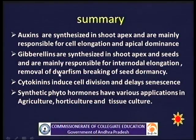Summary: We have discussed auxins, gibberellins and cytokinins. Auxins are synthesized in the shoot apex and are mainly responsible for cell elongation and apical dominance. Gibberellins are synthesized in shoot apex and seeds and are mainly responsible for internodal elongation, removal of genetic dwarfism, and removal of seed dormancy. Cytokinins induce cell division and delay senescence. Synthetic phytohormones have various applications in agriculture, horticulture and tissue culture.